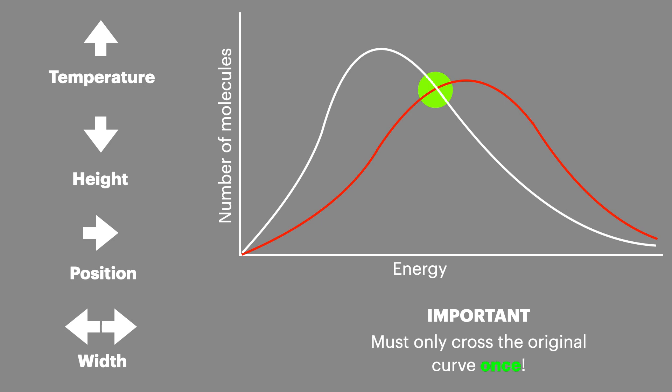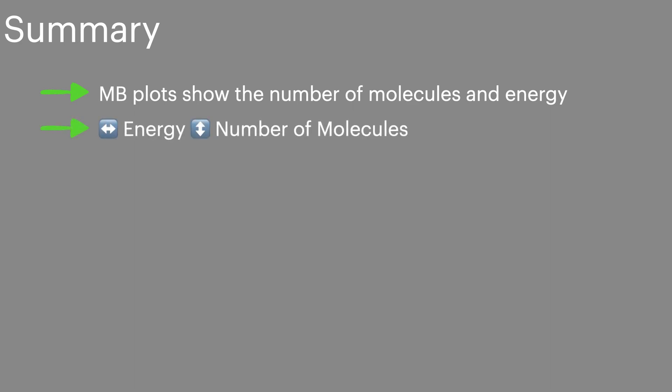So in summary, Maxwell Boltzmann curves show the number of molecules and their energy in an ideal gas. The energy is placed on the x-axis and the number of molecules is placed on the y-axis. The curve should not rejoin the x-axis after leaving the origin.